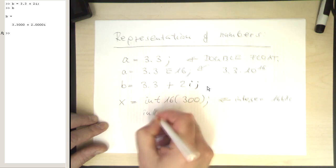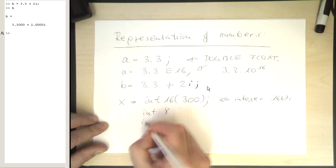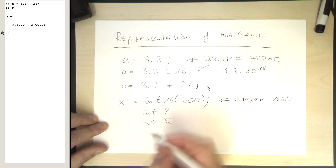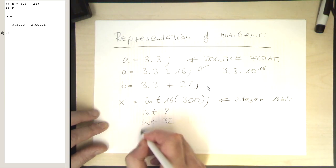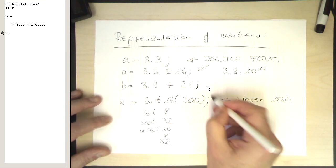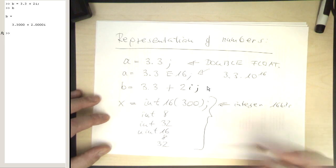And of course, there are also other functions like int8, int32. And then the same functions also exist as unsigned. This is uint16, uint8, or uint32. So these are all creating integer variables.